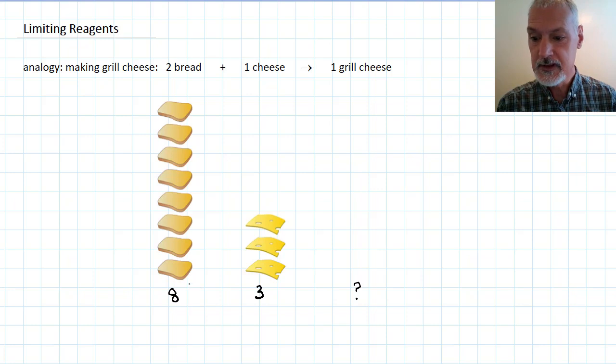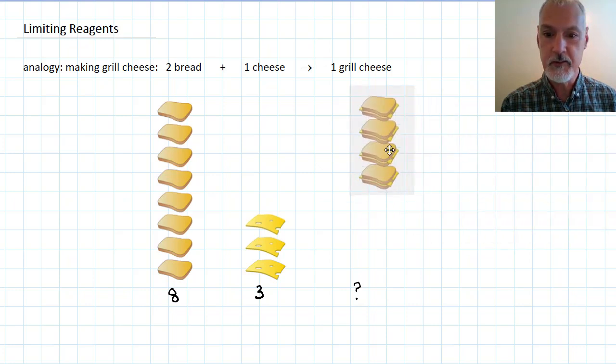One approach to this problem is to consider first of all just the bread by itself. With eight slices of bread, it should be possible to make four grilled cheese. That's case number one.